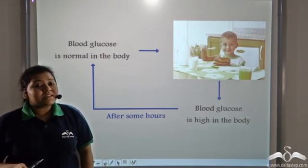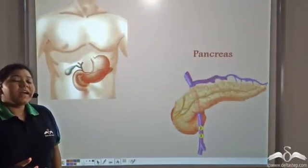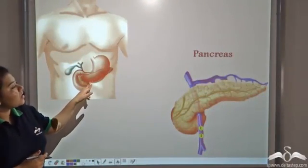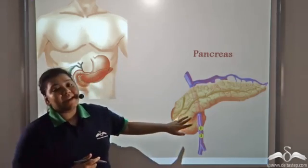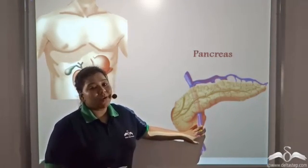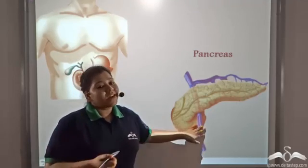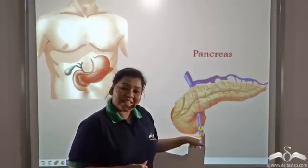Now, who secretes this insulin? There is an organ below and behind the stomach which is known as the pancreas. The pancreas is a J-shaped organ and its main function is to secrete a hormone known as insulin.